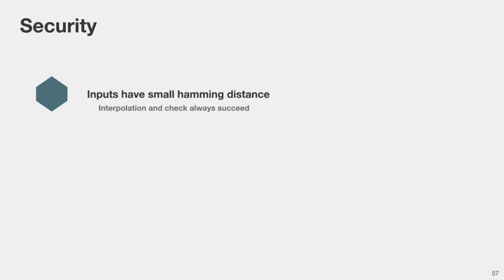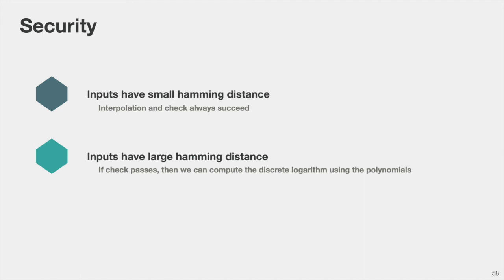So why is this a secure construction? Intuitively, if the inputs have a small Hamming distance, then the interpolation will always succeed. We pick the number of evaluation points in the hash output sufficiently high such that we always have enough points when the Hamming distance is small, and thus every point R will succeed in this equality check. We then show that if the inputs have a large Hamming distance and the check still passes, then we can actually compute R given the powers of R, and thus break our corresponding security assumption. Thank you for your attention — you can find all the details in the ePrint version of this paper.